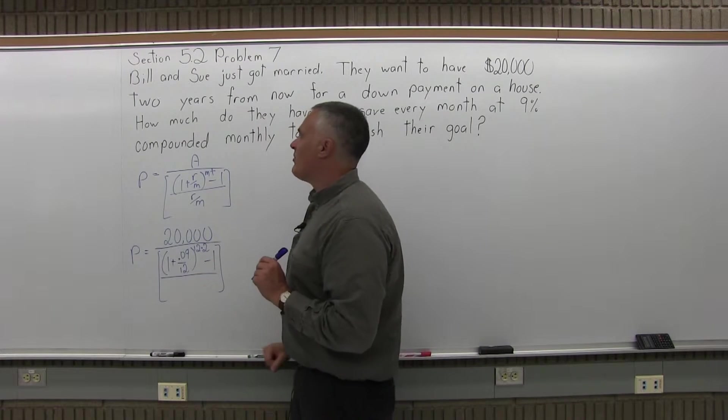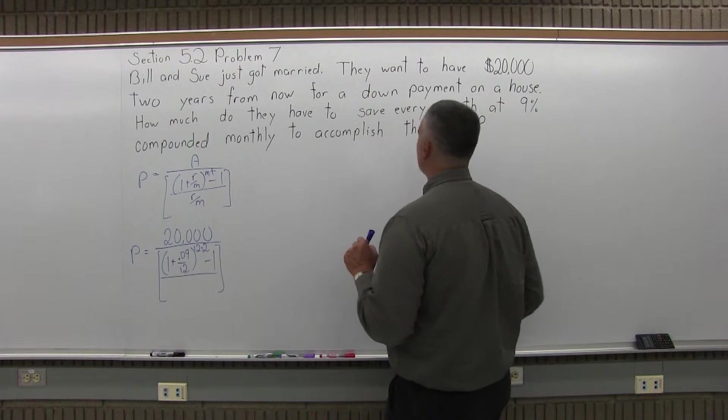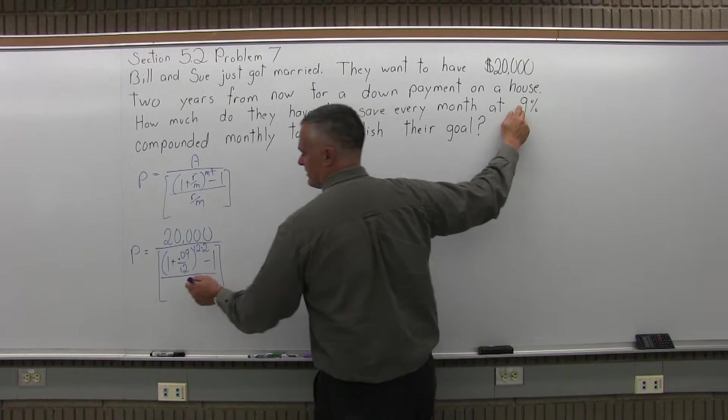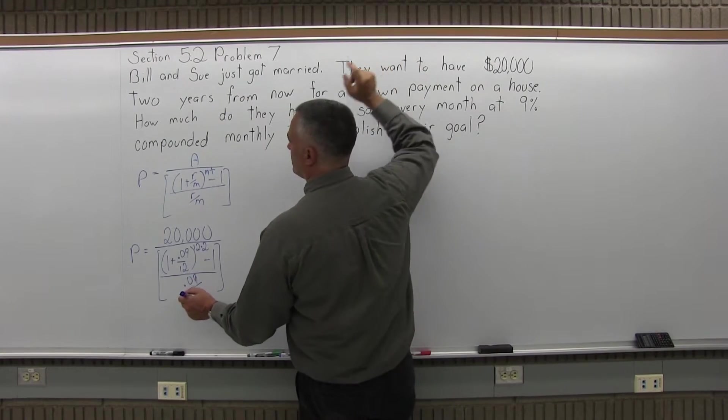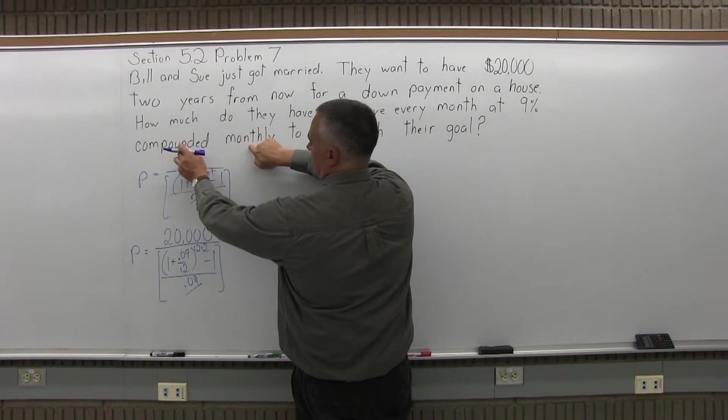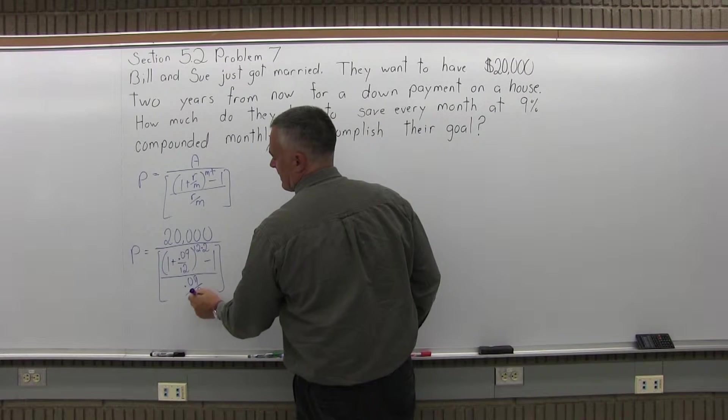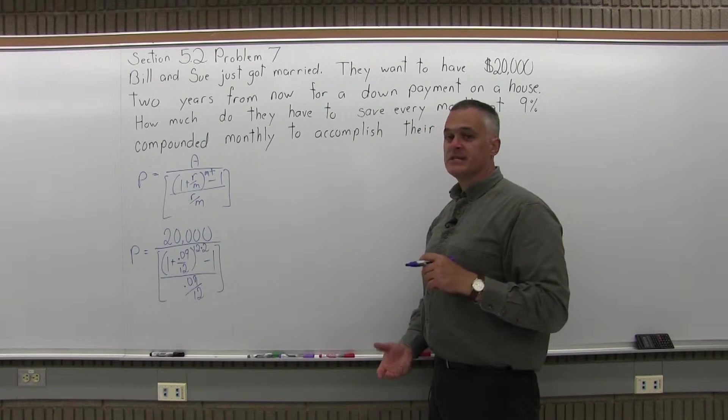And then in the denominator of my brackets, I have R over M again. So again, R, the rate as a decimal is .09. And M, the number of times compounded per year is 12 because we're compounding monthly. That's how the formula fills in.